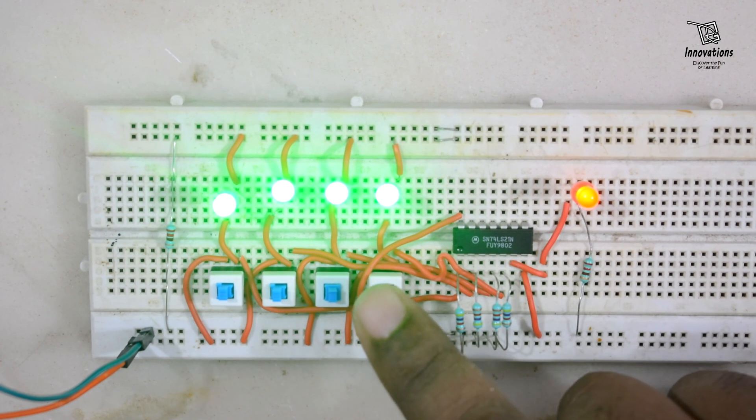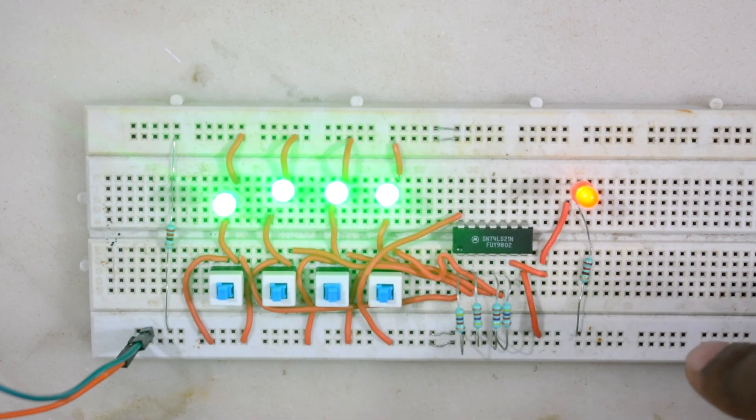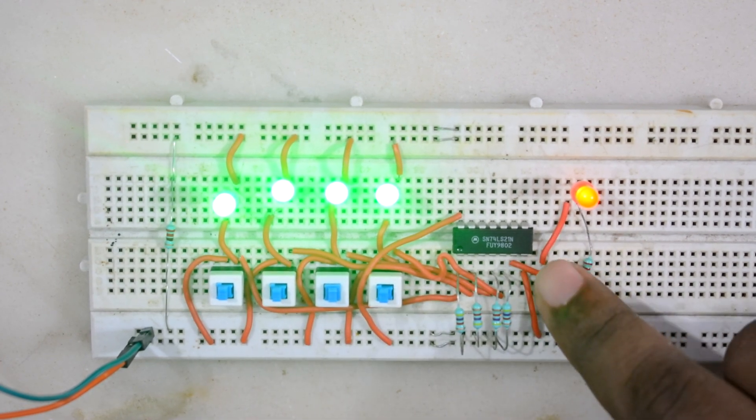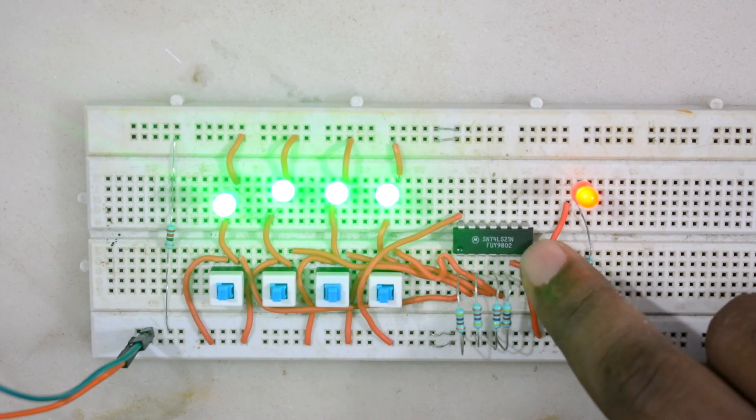This satisfies the truth table of a 4-input AND gate. We've verified this with the 74LS21 IC. In this video, we've demonstrated this, and we'll cover a new gate in our next video.